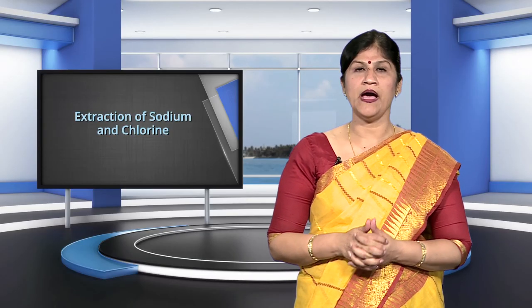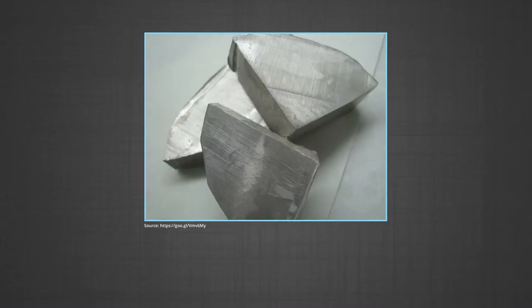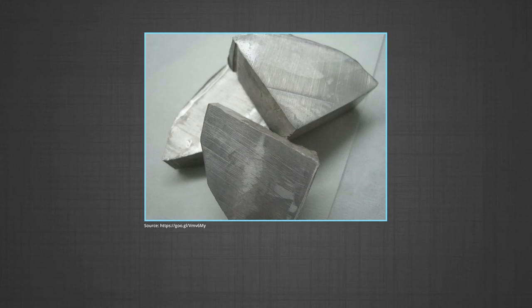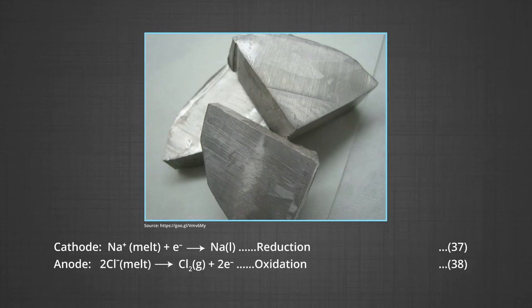Extraction of sodium and chlorine: if electrolysis of molten NaCl is carried out, sodium metal is produced at the cathode as the reduction product of sodium ions, and chlorine gas is obtained at the anode as the oxidation product of chloride. Sodium hydroxide and hydrogen are not produced in this case. The following reactions take place: at cathode — Na⁺ + e⁻ → Na (reduction); at anode — Cl⁻ → ½Cl₂ + e⁻ (oxidation).